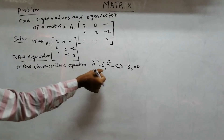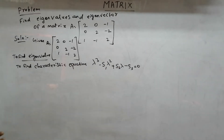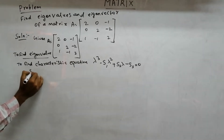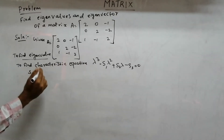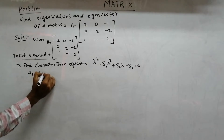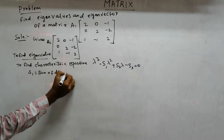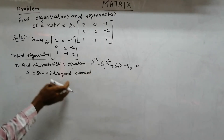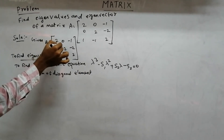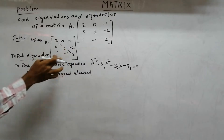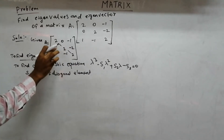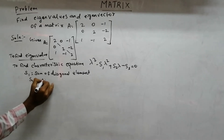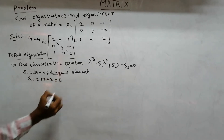This equation has three values to compute: s1, s2, and s3. First is s1. s1 is the sum of the diagonal elements. The diagonal values are 2, 2, and 2, so s1 equals 2 plus 2 plus 2, which equals 6.